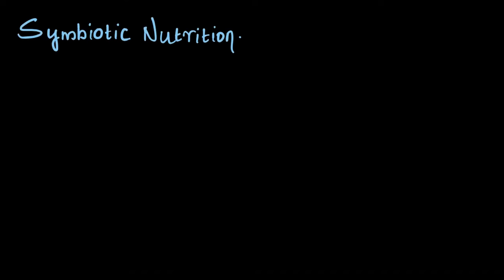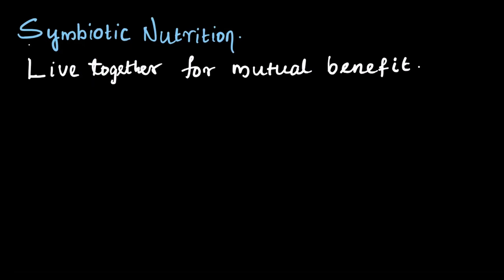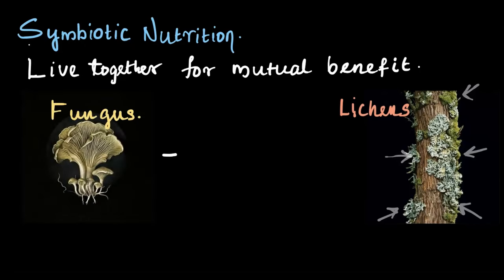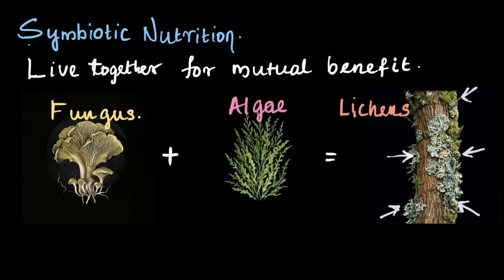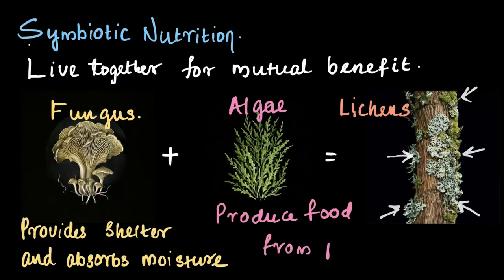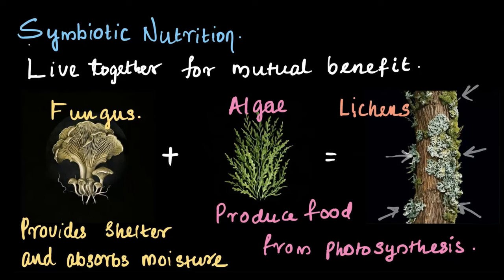In symbiotic nutrition, the third type of heterotrophic nutrition, two organisms live together for their mutual benefit. A great example of this is lichens — organisms that live on bare rocks, trees, etc. Lichens are a beautiful partnership between fungi and algae. In this relationship, the fungus provides shelter and absorbs moisture, whereas algae produce food through photosynthesis, thereby benefiting mutually. Unlike parasitic nutrition where the host had no benefit, here they mutually benefit, allowing lichens to thrive in extreme environments like bare rocks and tree trunks. That's known as symbiotic nutrition.